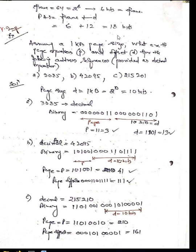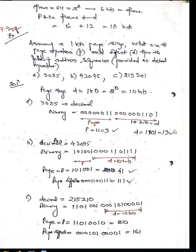Now the third problem: assume a 1KB page size. Find the page numbers and offsets for the following addresses: 3085, 42095, and 15201. Draw the logical address space with page number and page size. Page size is 1KB = 2 to the power of 10, so 10 bits on the right side. Convert 3085 decimal to binary, take the last 10 bits as the offset, and the remaining bits give the page number. This yields 3 bits for page number and 10 for offset — 13 bits total for the logical address space.